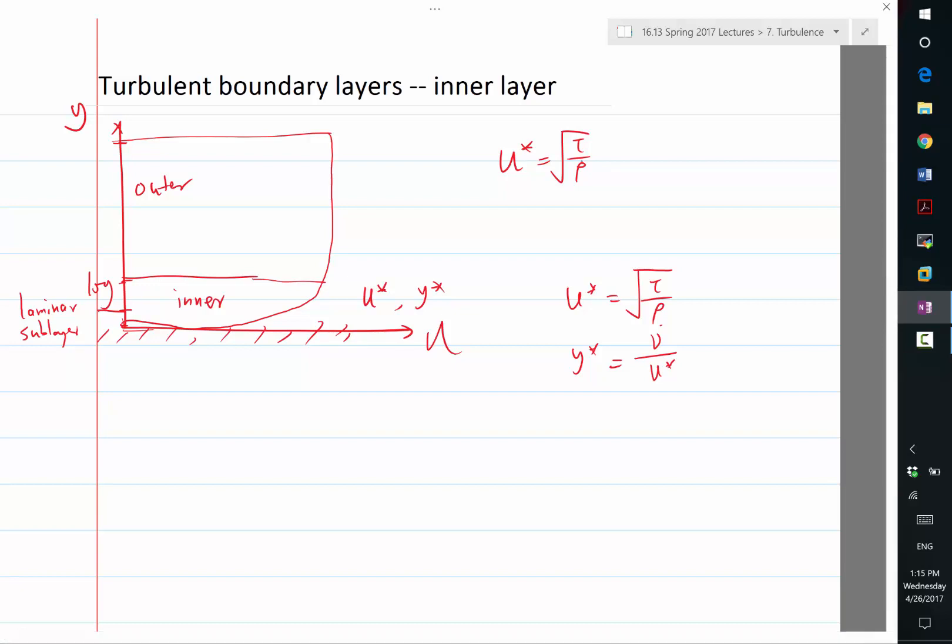For very high Reynolds number flows, the large scale structures of the flow, which determine everything like Reynolds stress, only depend on the large scale features of the flow. If the larger scale features are not affected by this very small viscosity, and only the smaller scales are affected by viscosity, then you can safely assume that as you increase the Reynolds number further, the large scale features won't change.